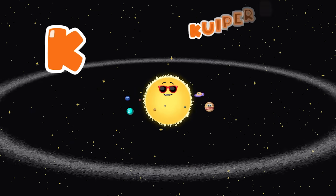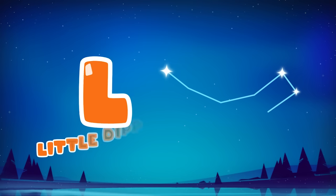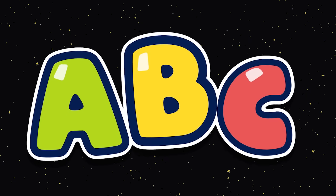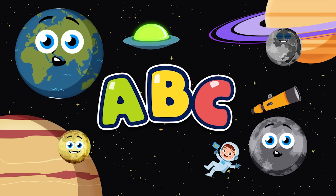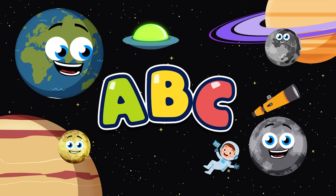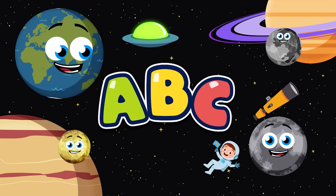K starts with Kuiper Belt, L's in Little Dipper. These are the ABCs of space for you and me. Let's learn these space objects while we sing into D!